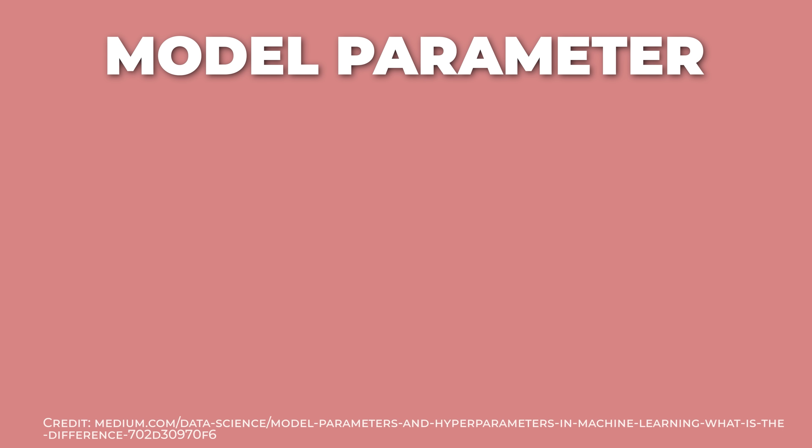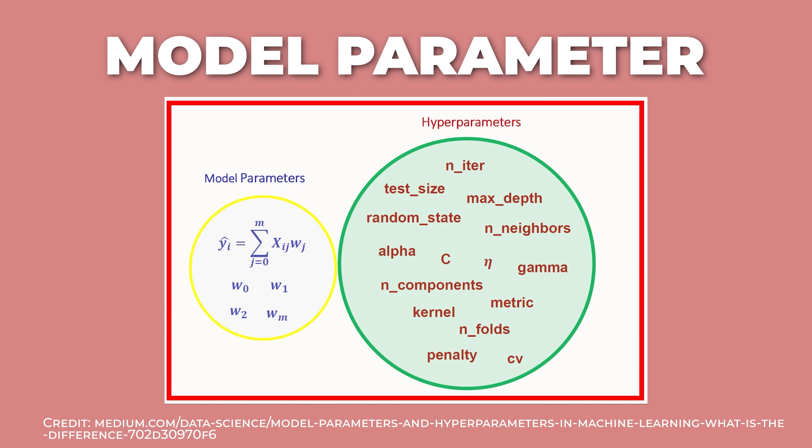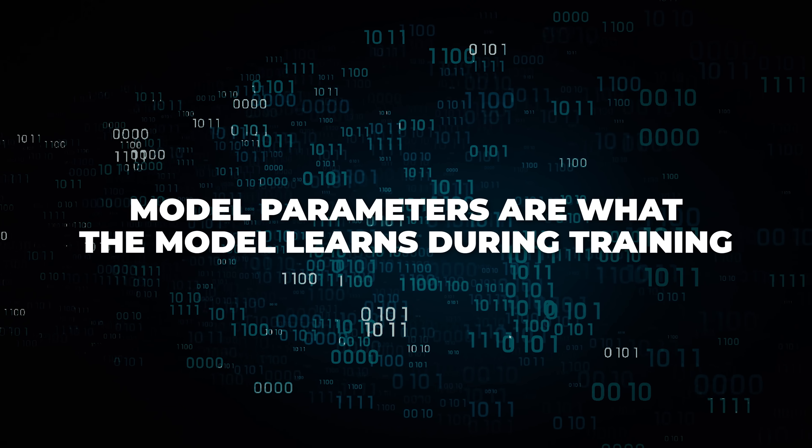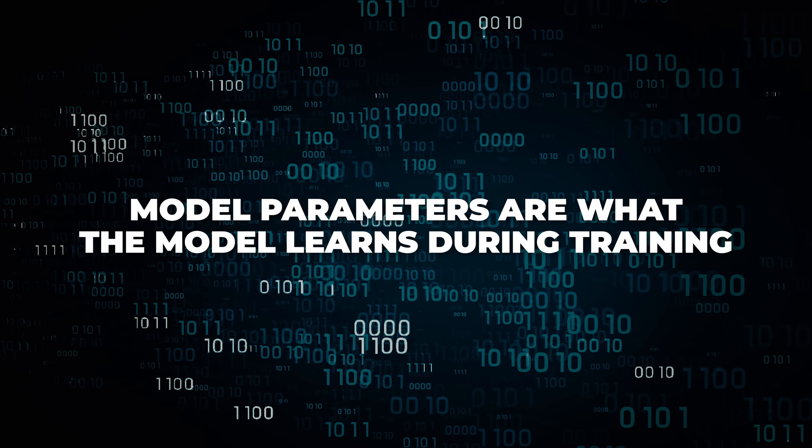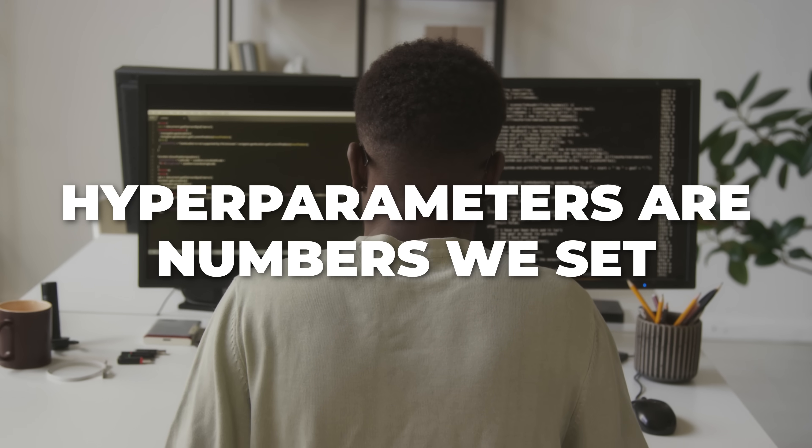Now back to the concepts. One thing that comes up a lot in AI and ML is the idea of a model learning. When we say a model is learning, we mean that it's updating its parameters. Parameters are the internal numbers that control the model's behavior. During training, the computer adjusts these numbers until the model makes fewer mistakes. Model parameters can capture more patterns, but they also cost more to store and run. Model parameters are the numbers that the model learns during training. Hyperparameters are numbers that we set.